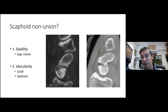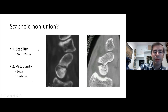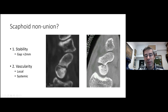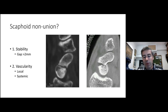On scaphoid non-union: we need a lateral reconstruction CT or tomogram to assess flexion and displacement. A fracture with a gap less than two millimetres is very likely to go on to heal, whereas a fracture that is flexed and has opened by more than two millimetres has less stability. Instability is the primary cause of scaphoid non-union. Vascularity is less of an issue acutely and even less so in terms of non-union — vascular reconstruction is relatively rarely required. Almost invariably, if you can restore stability, you will achieve union.